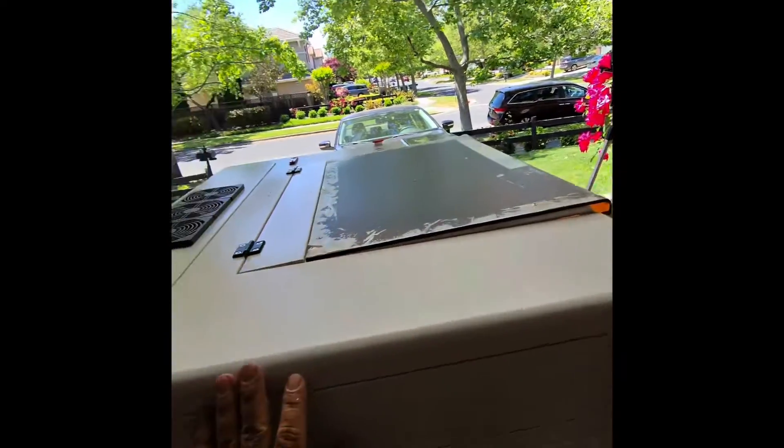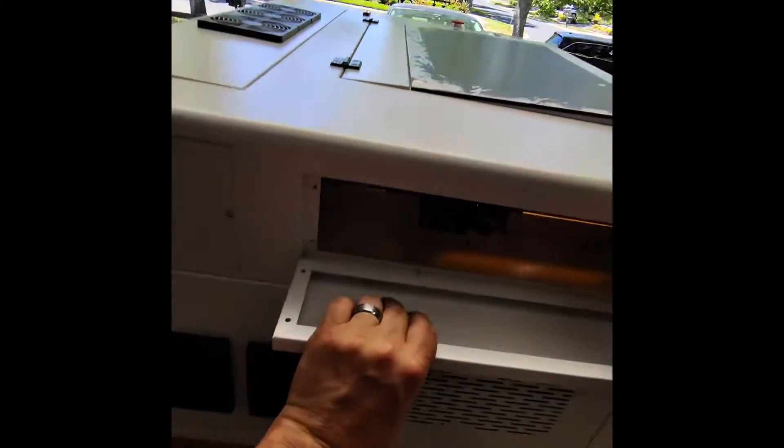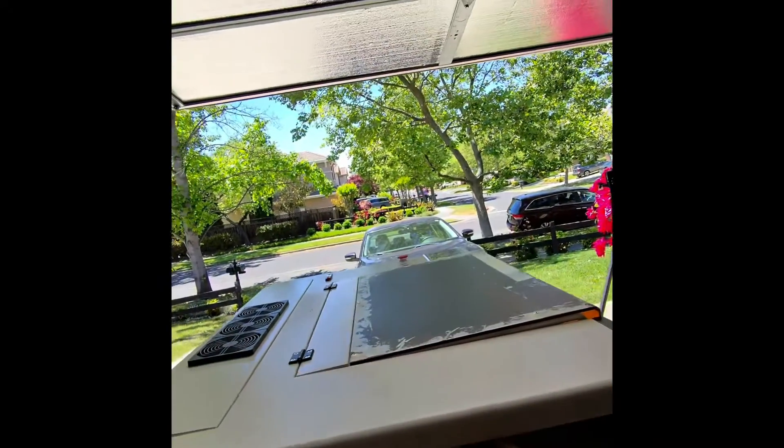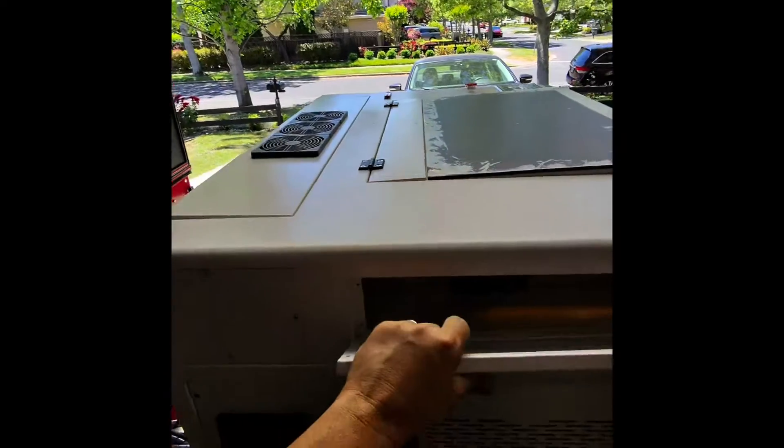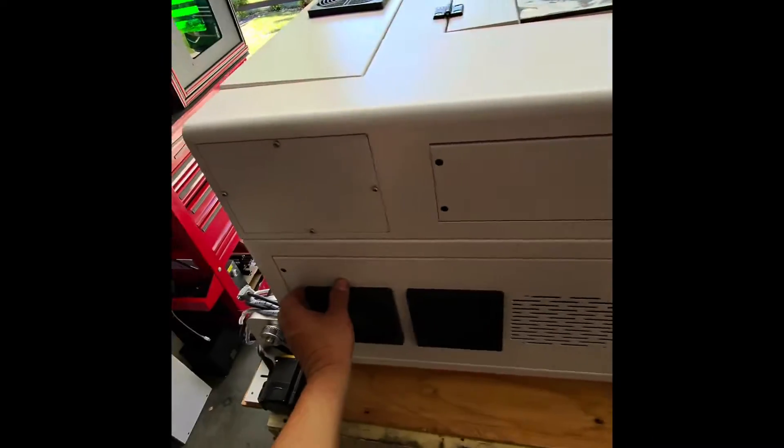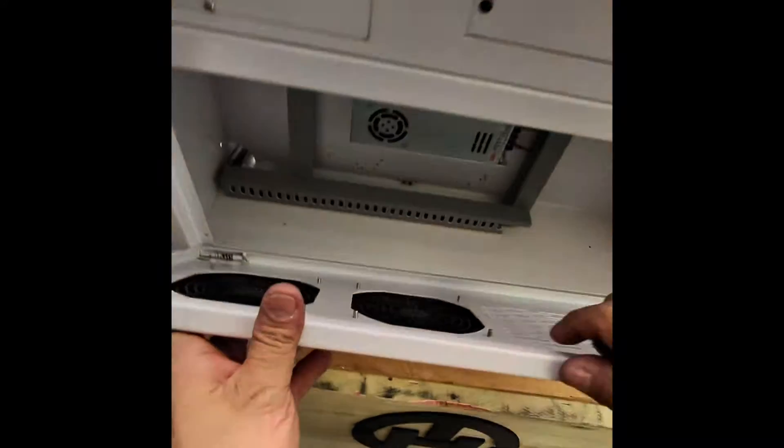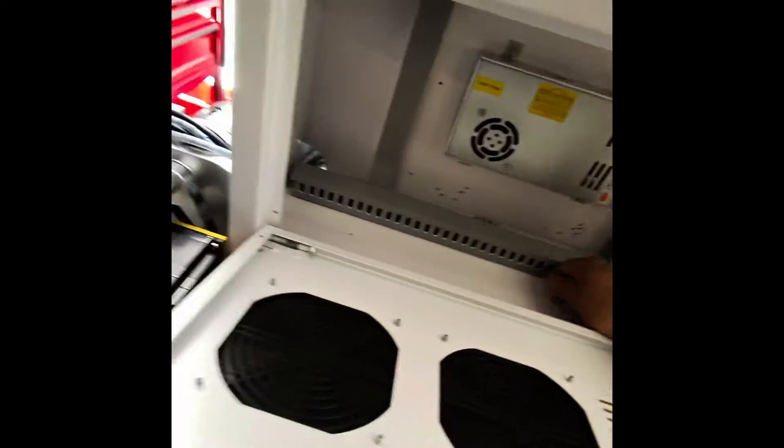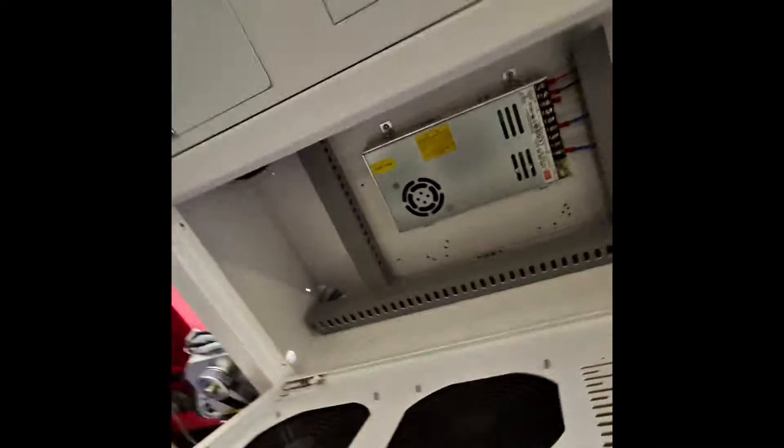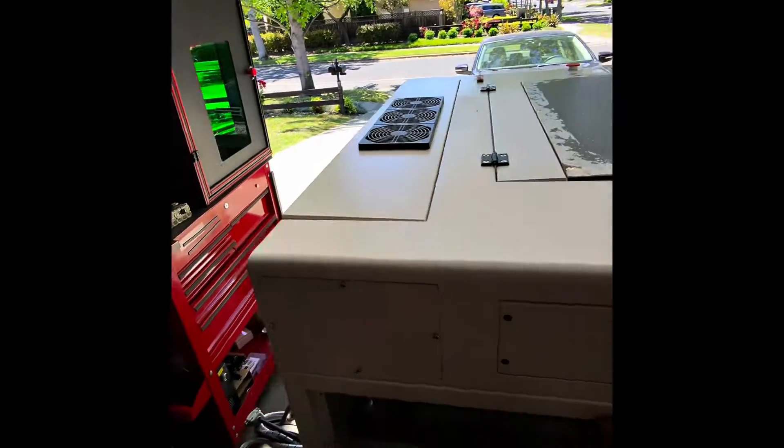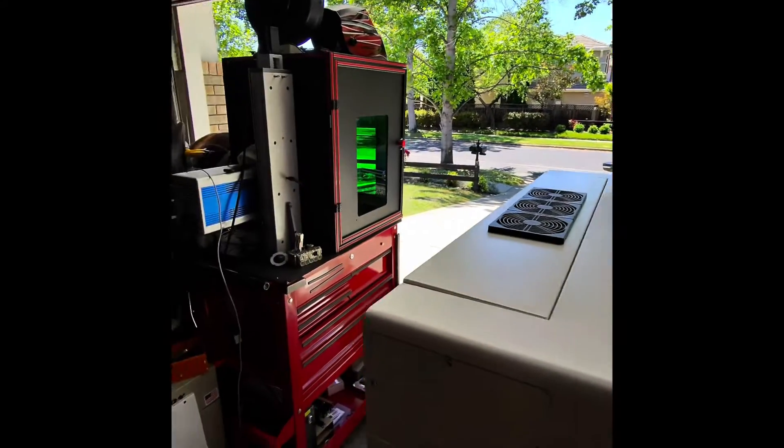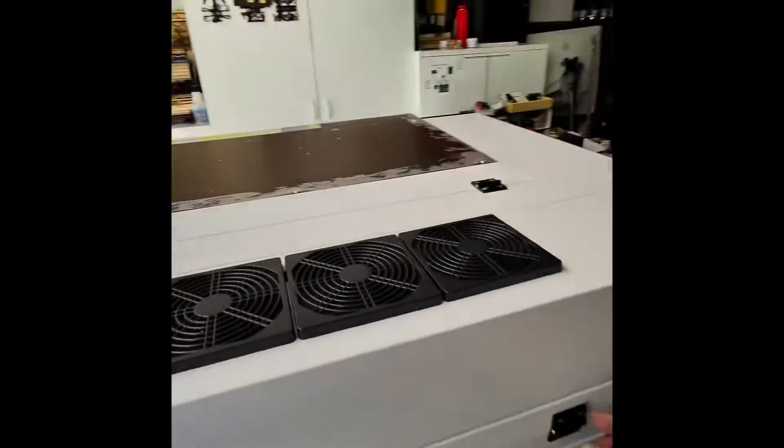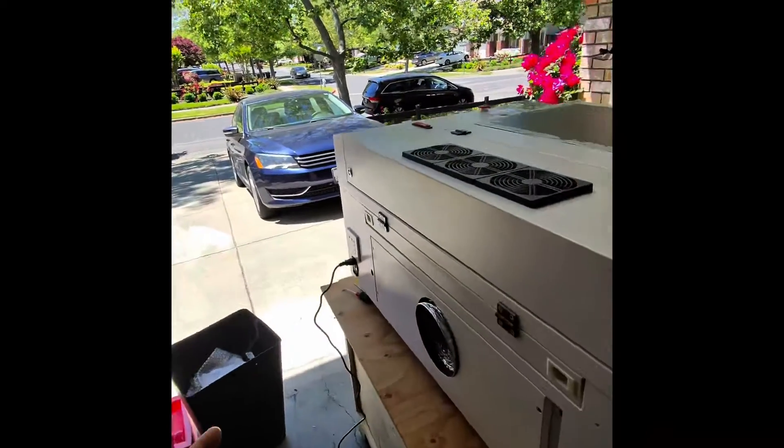We have here another door, and this one, what it has is the power supply for the laser. Alright, again in the left side we have a door to give us access to adjusting the second mirror, and that's pretty much what it does in that one in there. And then this other panel over here just gives us access to the laser power supply. There's nothing else on this side, so that's the laser power supply in there. This little door gives us access to the beam combiner. Now moving into the back of the machine.